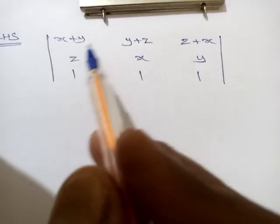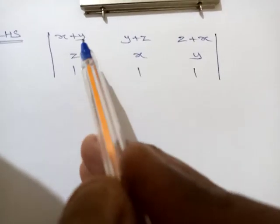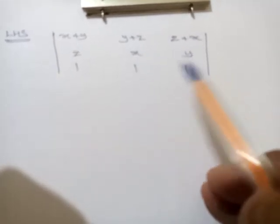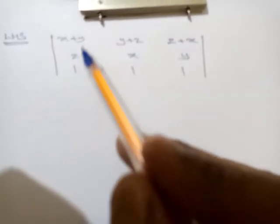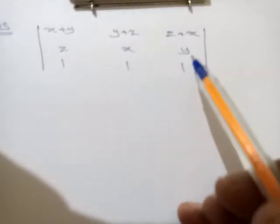Consider the first row and second row. Here x+y, here z. Here y+z, here x. Here z+x, here y. If you add these two: x+y+z, this also x+y+z, and this also x+y+z.